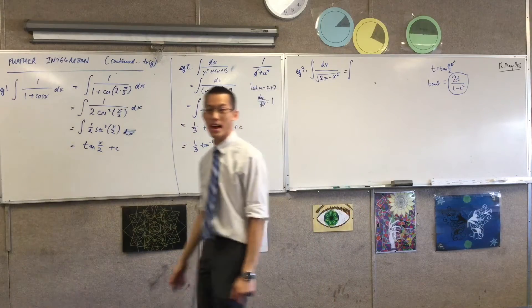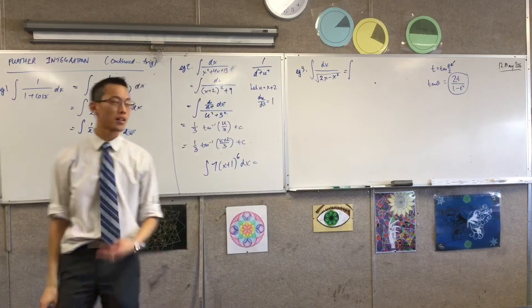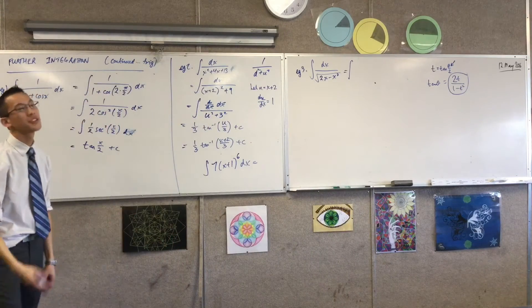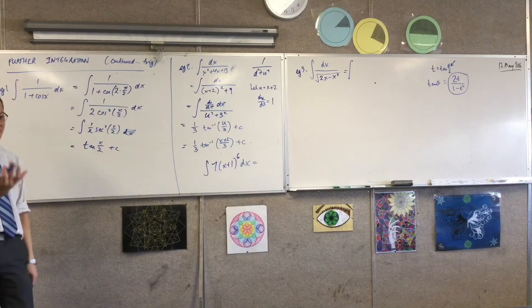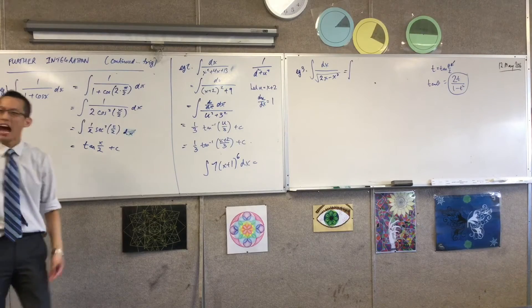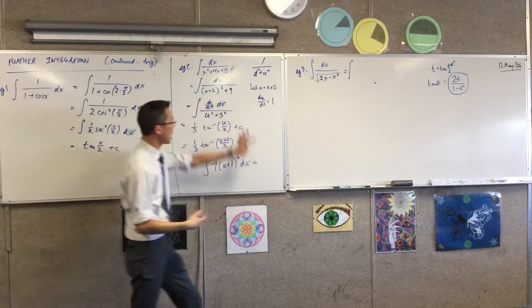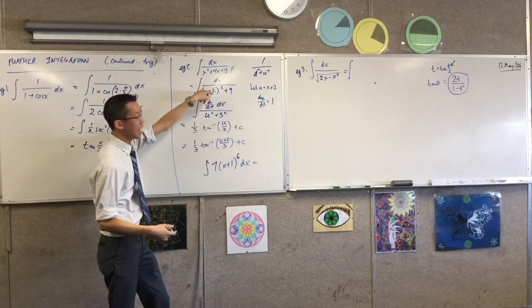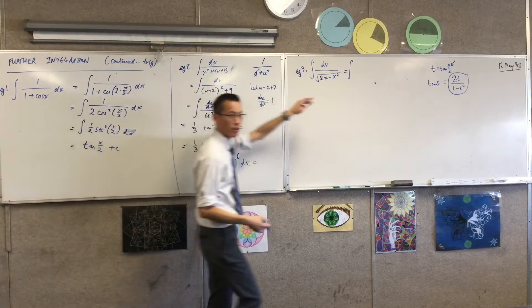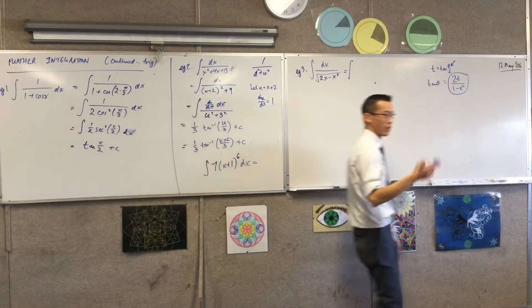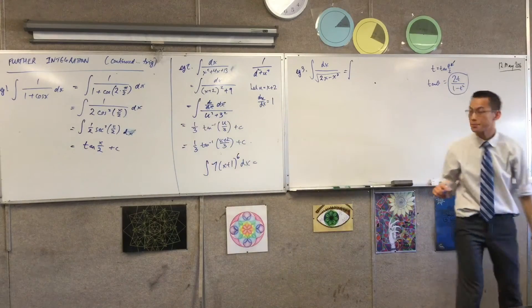Someone help me out. What's an example — I want some working here, please, some working. How am I going to do kind of the same sort of algebraic game here in order to get something I can work with right now?